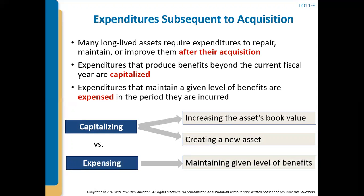Capitalizing means we are increasing the asset's book value or creating a new asset, versus if we're just maintaining the given level of benefits that asset is already bringing in, we expense it. If your machine breaks down and you have to repair it, that's an immediate expense. But if we're actually adding to the asset to increase its book value, or creating a whole new asset, we would capitalize it — meaning it would go on the balance sheet as an asset.